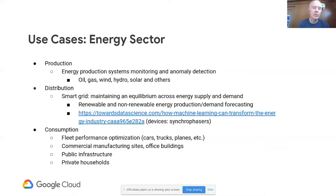On the production side, you have energy production systems that need to be monitored and any anomalies detected. Energy has all its facets — oil, the established energy sector, gas, wind, hydro, solar, and others. Each has its specific ways of producing energy, whether extracting from the ground or from the sun, and requires accordingly monitoring and anomaly detection.